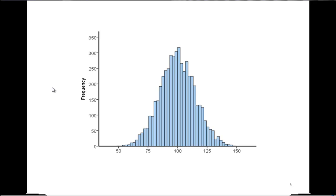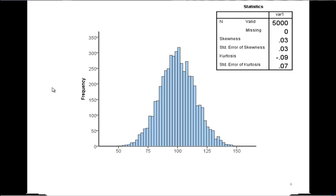Here's what a simulated data set looks like. This is a sample size of 5,000. I simulated it to be normal, and of course it didn't come out to be perfectly normal. I've got a skewness of 0.03 and a standard error of skewness of 0.03, and a kurtosis of negative 0.09 and a standard error of kurtosis of 0.07.